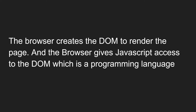When we have created an application and try to load it, the browser first creates the DOM to render the page. The browser does everything first: it creates the DOM, renders the page, and after the creation of the DOM, the browser gives JavaScript access to the DOM. JavaScript is a programming language, and the browser itself gives it access to the DOM.